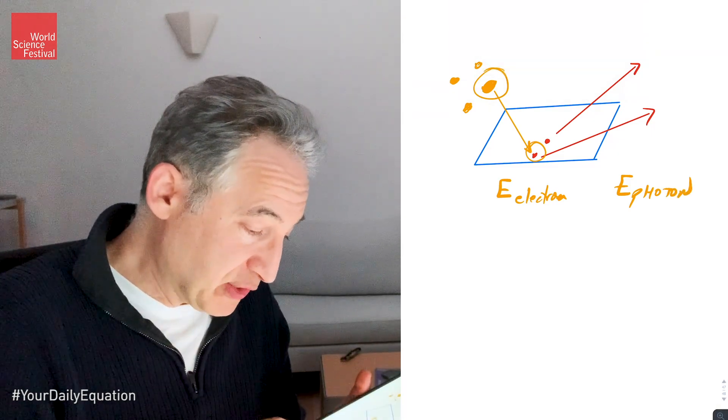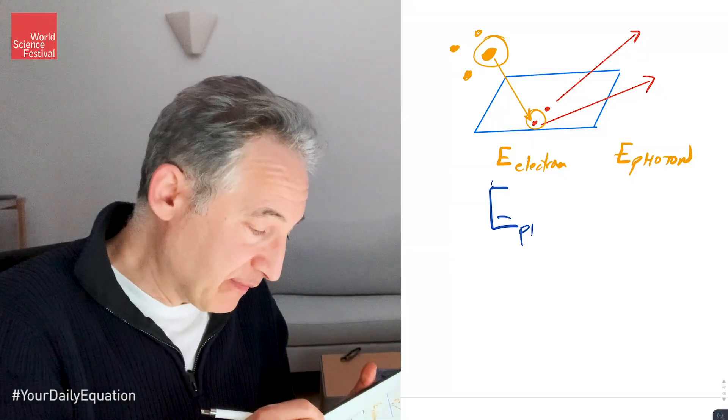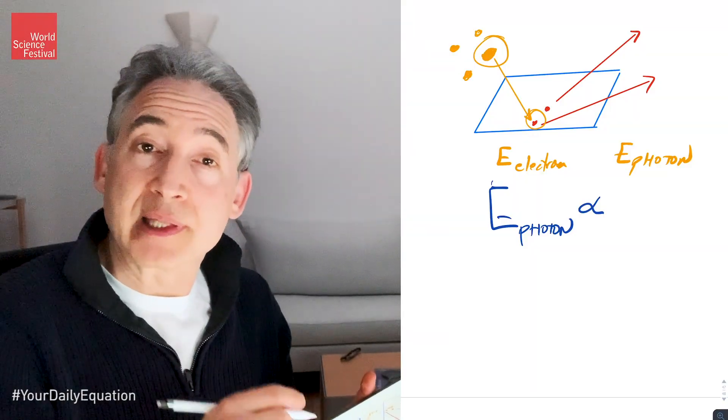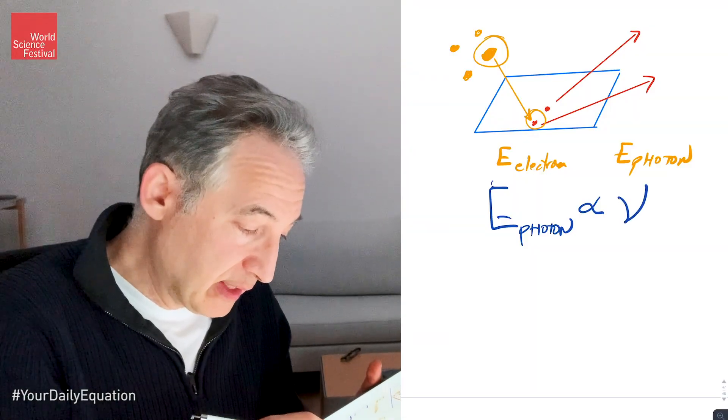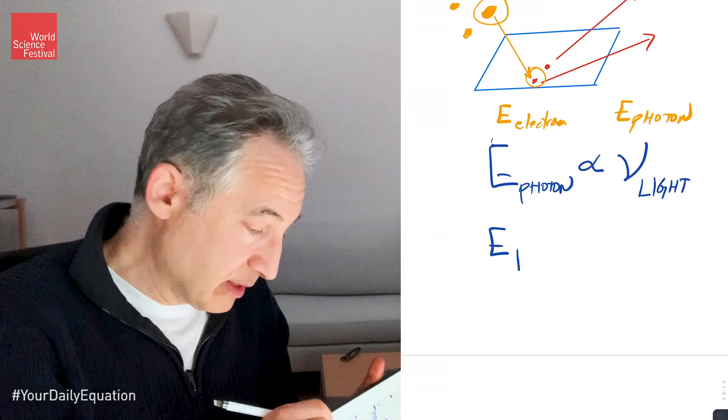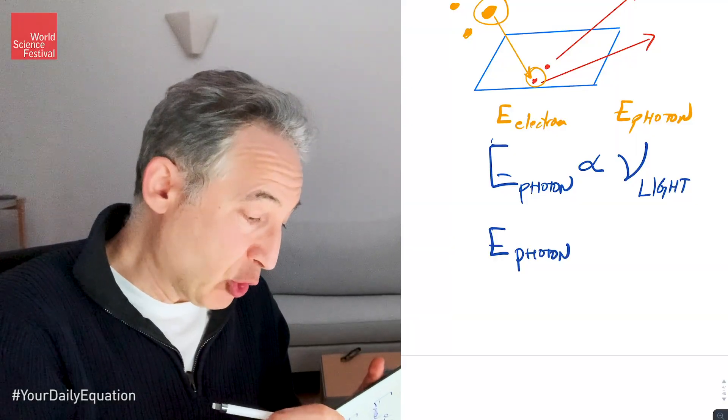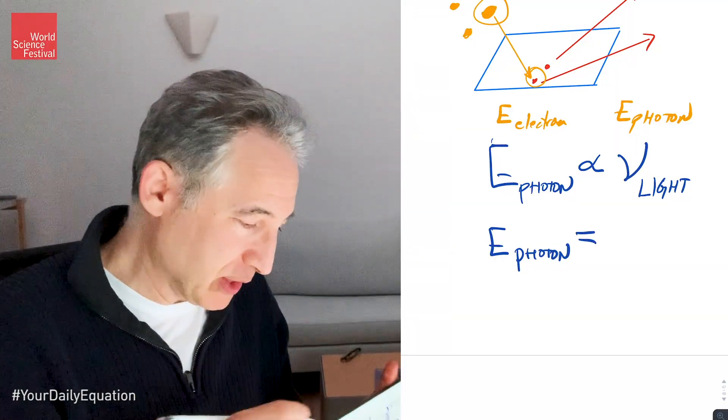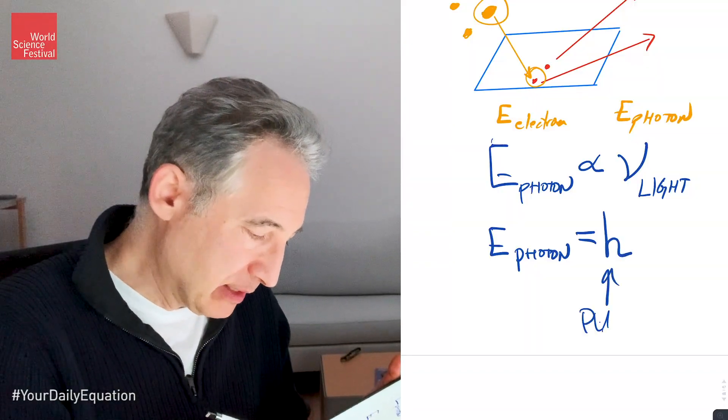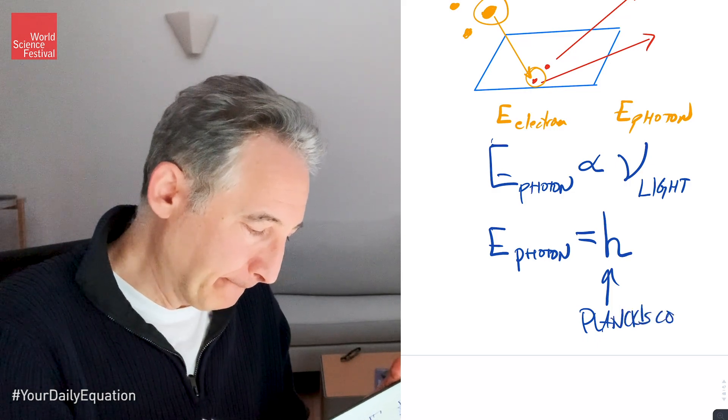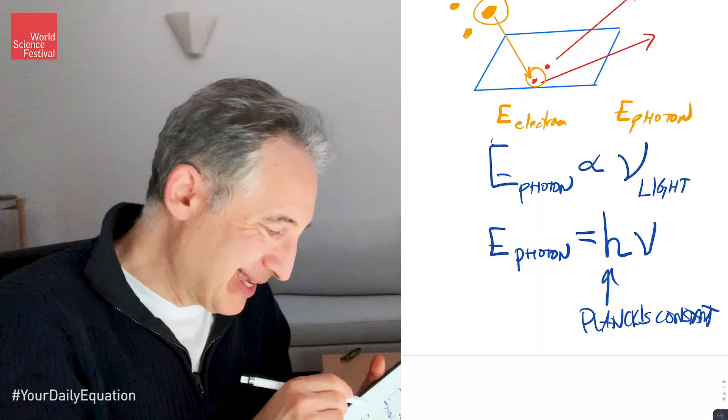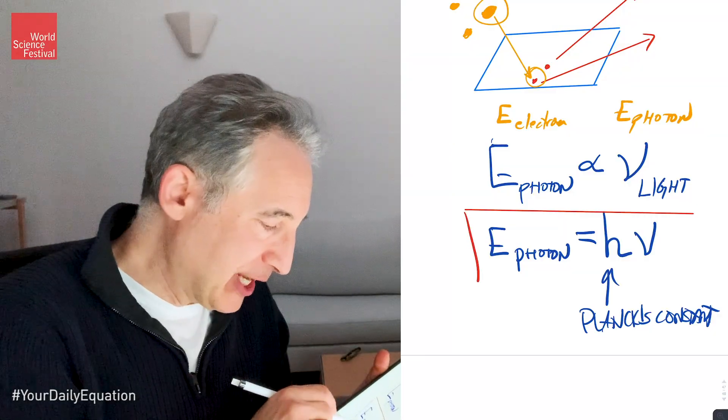Einstein says, in order to match the data, that the energy of that photon must be proportional to the color of the light, which is the frequency of its oscillations. And indeed, he can go further and make that proportionality into an equality, which is today's daily equation, by using a number called h, which is known as Planck's constant, and the equation, therefore, that he comes to, is E equals h nu.